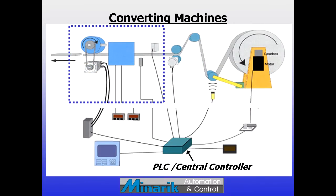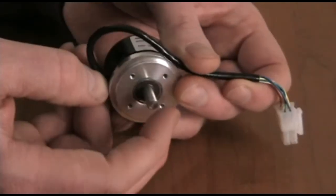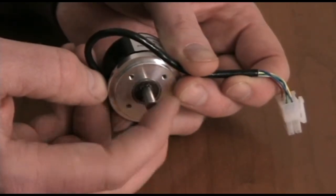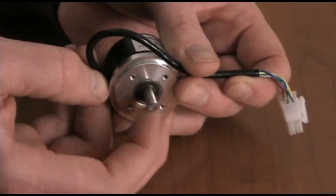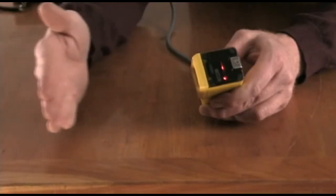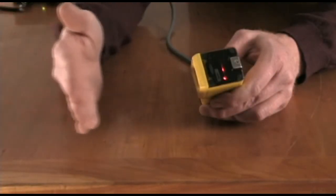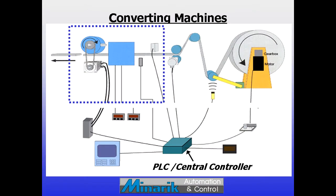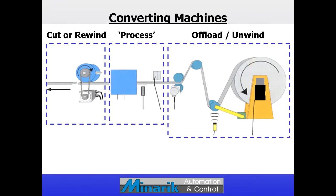To do this, a master controller or PLC knows the amount of material that will be needed downstream. It can also take information from encoders that ride directly on the material roll, or analog sensors that put out a variable voltage as web tension changes. The controller can then send speed commands to an AC or DC motor drive to speed up or slow down the offload. The result is a constant material speed that matches the need of the processes downstream.